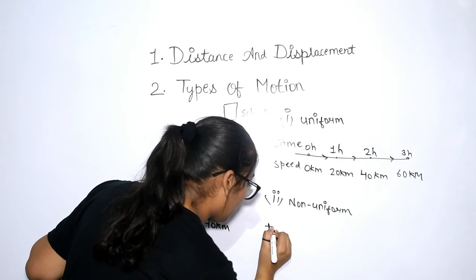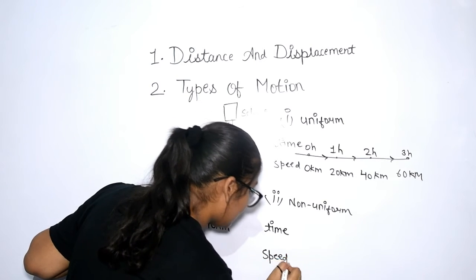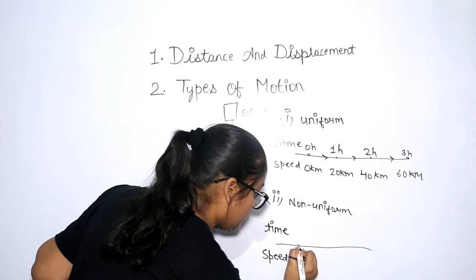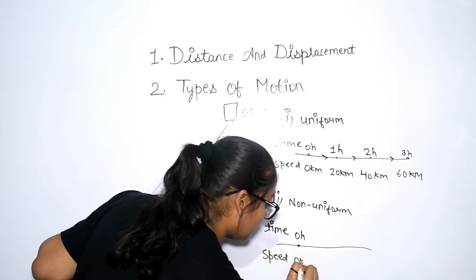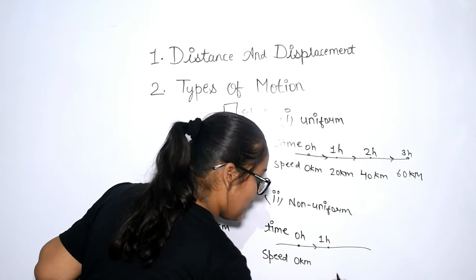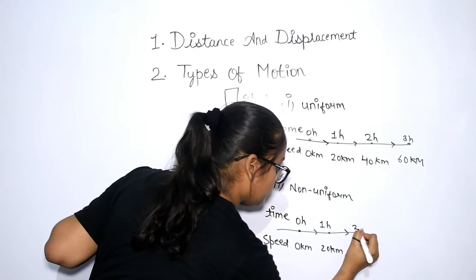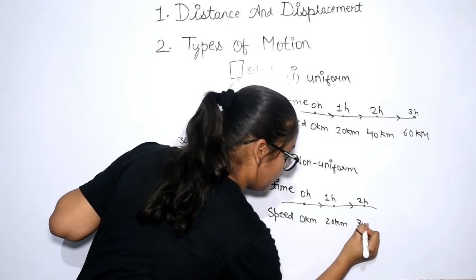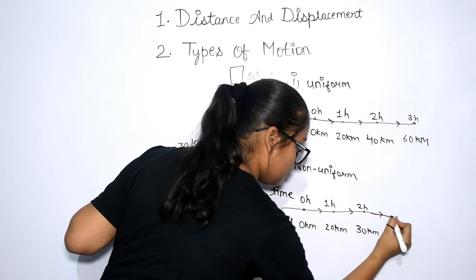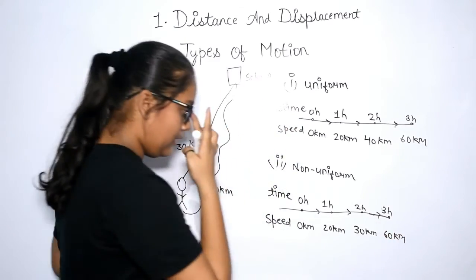Let's take the example of non-uniform motion. It is time and it is speed. 0 hour is equal to 0 km. 1 hour is equal to 20 km. 2 hour is equal to 30 km. 3 hour is equal to 60 km.